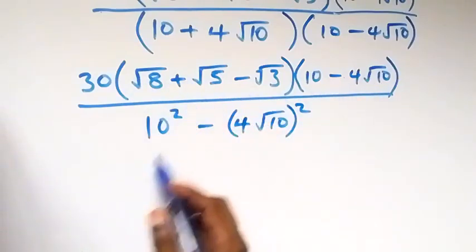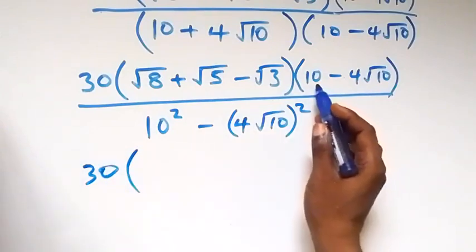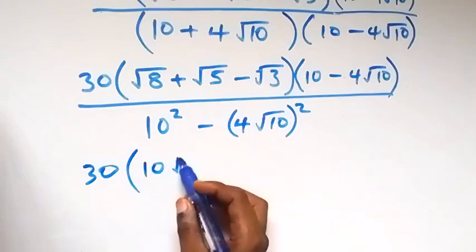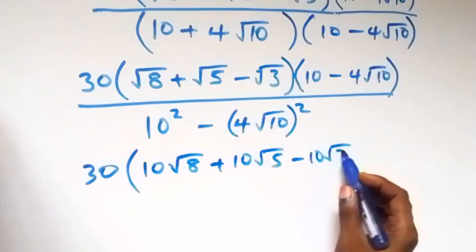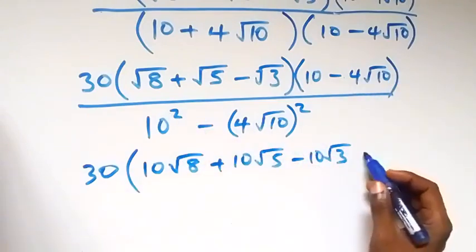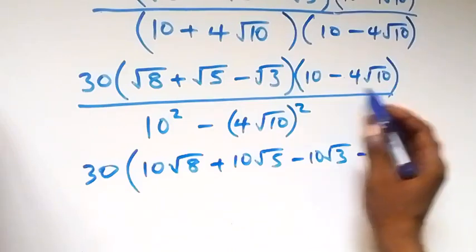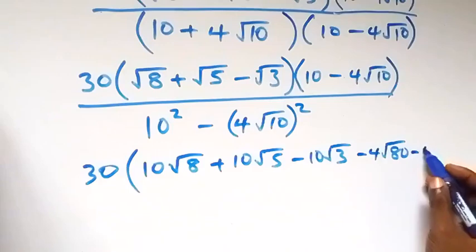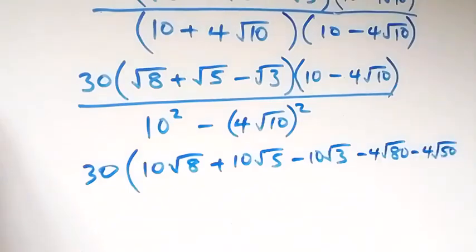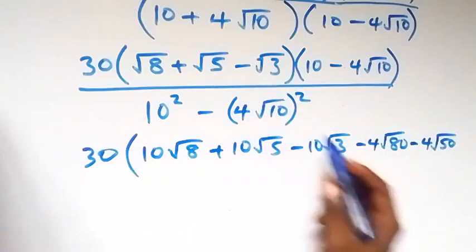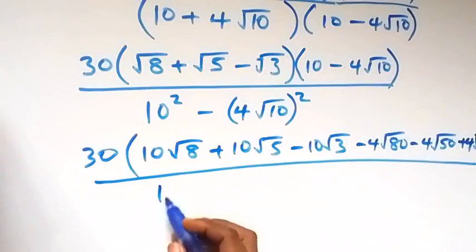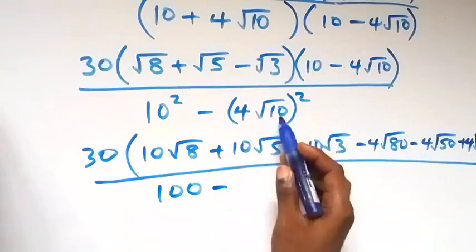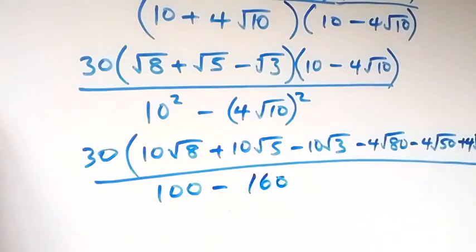Opening the bracket we still have 30 into bracket: 10 times root 8 gives 10 root 8, then plus 10 root 5, minus 10 root 3, then minus 4 root 10 times root 8 — that's root 80 — then minus 4 root 10 times root 5, and minus 4 root 10 times minus root 3 gives plus 4 root 30. Then divided by 10 squared, that's 100, minus 4 squared times 10: that's 16 times 10 equals 160.